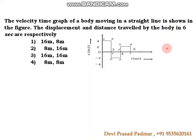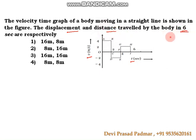In this problem, a velocity-time graph is given. We need to calculate the displacement and distance travelled within six seconds. Time is taken along one direction and velocity along the other axis.